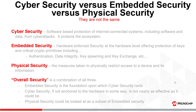Physical security refers to the measures we take to physically restrict access to a device and its information. Embedded security devices typically have physical security built in. The PCB may have additional physical measures like metal shields and signals which indicate if a case were opened, and that sort of thing.